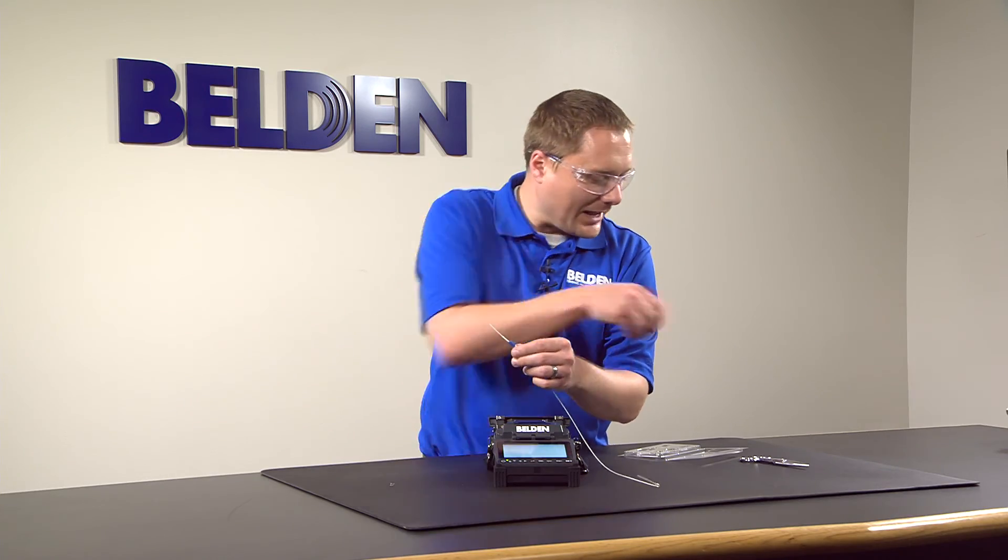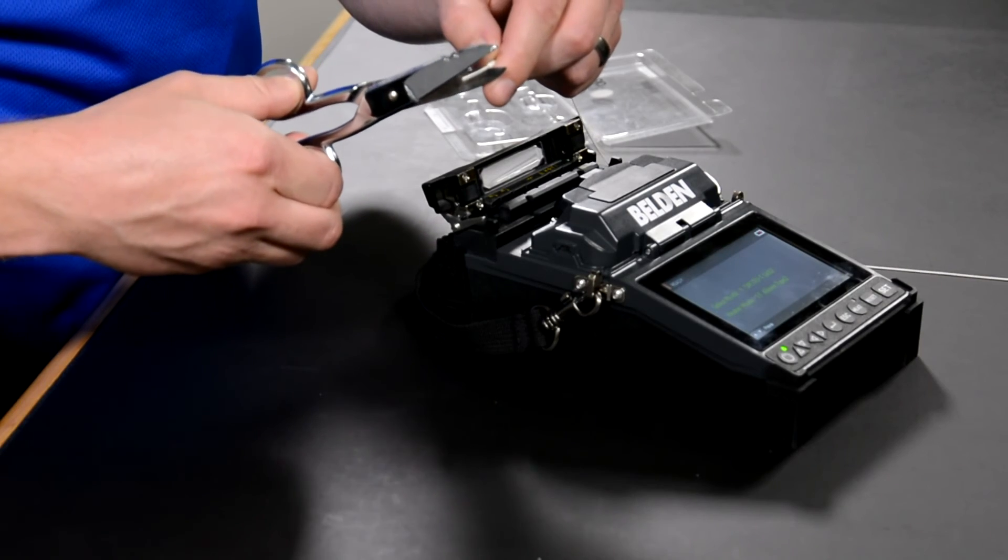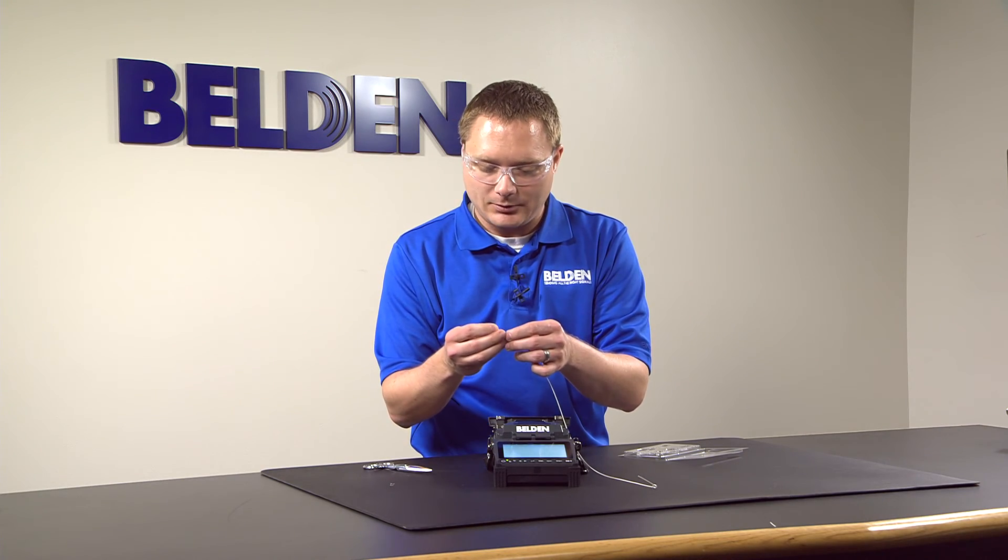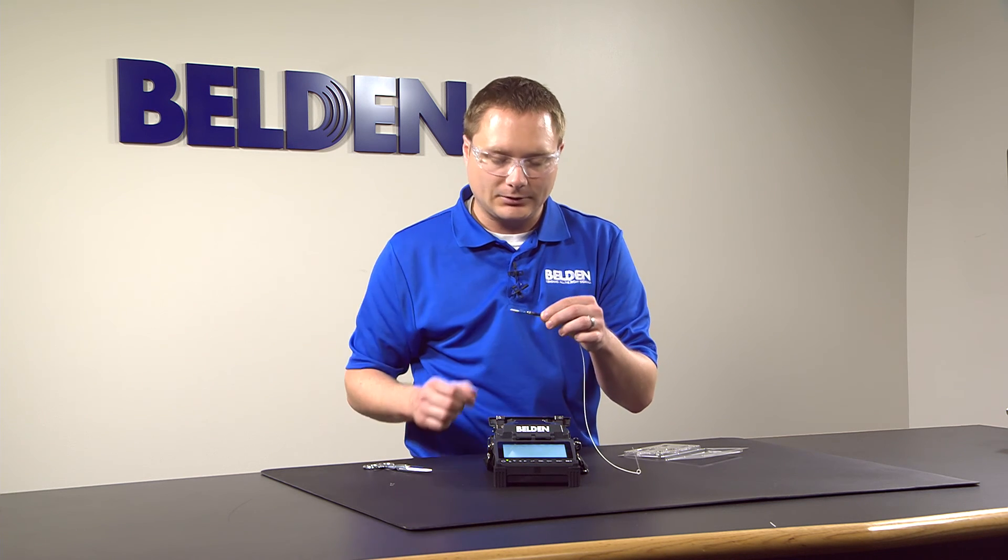We can use scissors and cut off the excess portion of this dust cap and now we have a much shorter dust cap. And that completes the assembly of our FX Fusion 900 micron connector.